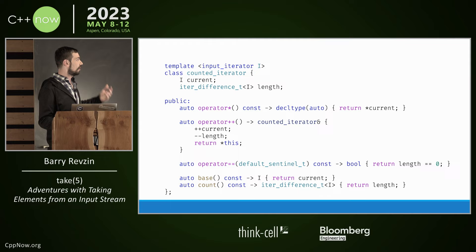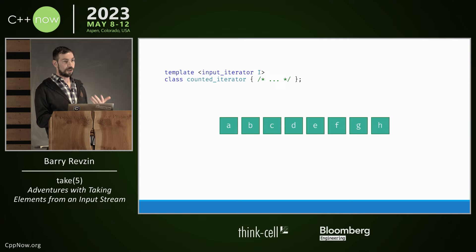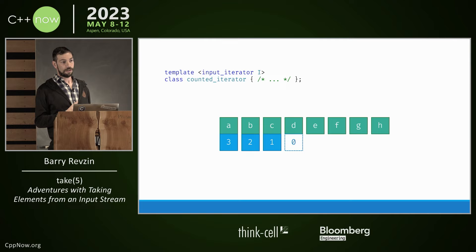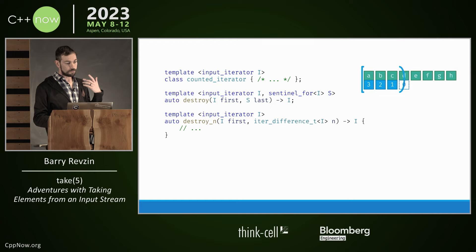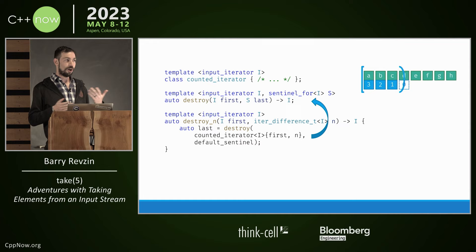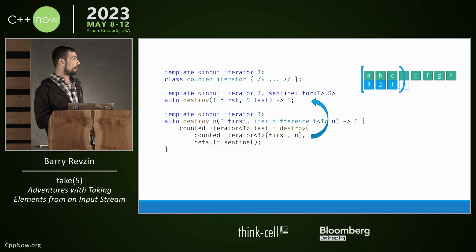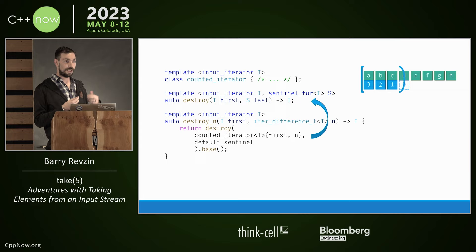Using counted_iterator, we can implement destroy_n by calling destroy with a counted_iterator paired with default_sentinel. The return value — what destroy_n needs to return — is last.base(), which is the iterator to the element just past where we stopped. This avoids code duplication, and this is basically how all the _n algorithms are implemented and specified. The counted_iterator abstraction is so cheap — decrementing an integer and comparing to zero — that it's probably not worth special-casing random access iterators, even though their increment is also constant-time.